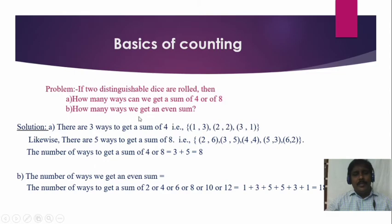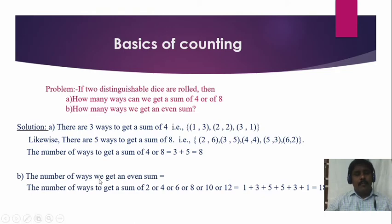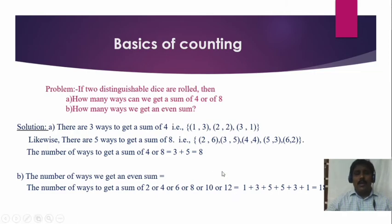Another question: how many ways can we get an even sum? When a die is rolled two times, we have 36 elements. The even numbers possible are 2, 4, 6, 8, 10, and 12. The ways to get each: sum of 2 is 1 way, sum of 4 is 3 ways, sum of 6 is 5 ways, sum of 8 is 5 ways, sum of 10 is 3 ways, and sum of 12 is 1 way. Total is 18 ways.